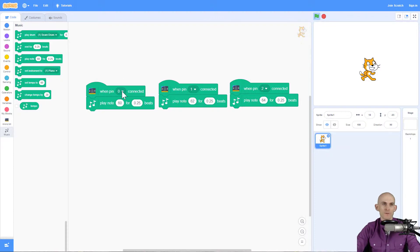So I've already set up some code here for pin zero, it's going to play this note. For pin one, it's going to play this note. And for pin two, we're going to play this note. And if you're in band or orchestra, you probably know that you can play a lot of different songs with only those three notes.